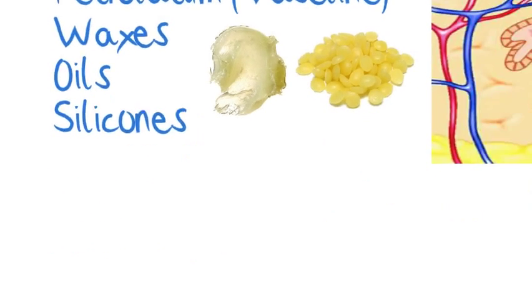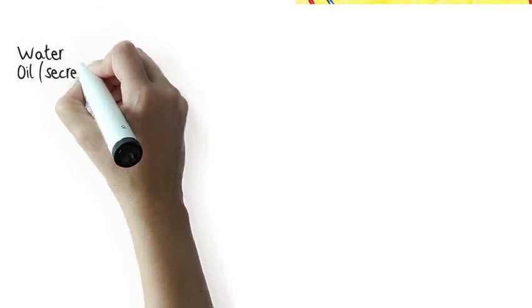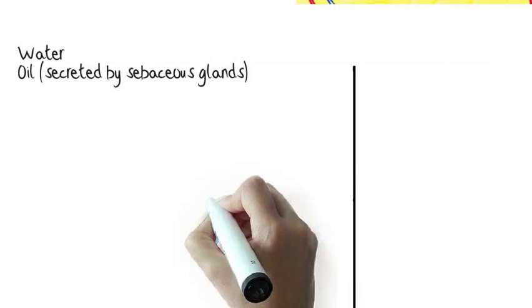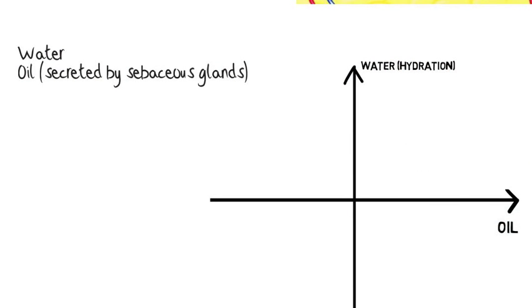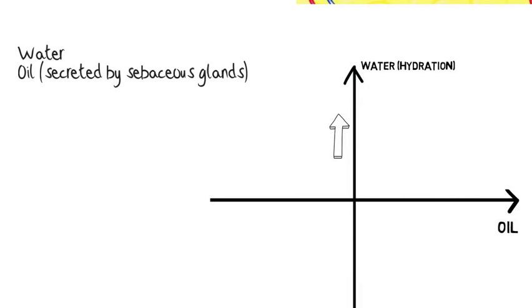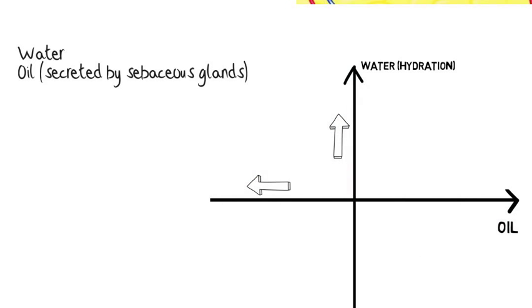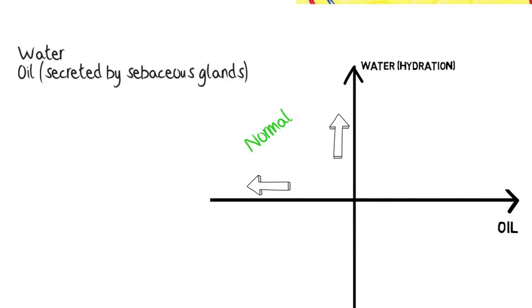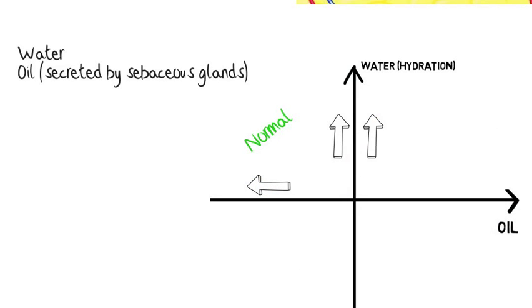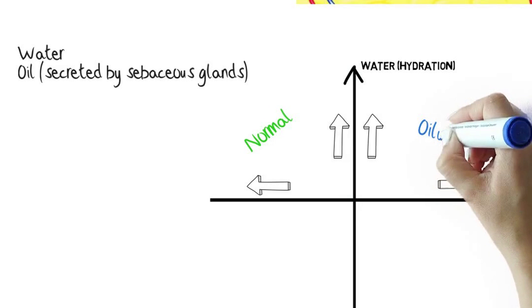Our skin contains both water and oil secreted by the sebaceous glands. So, if you look to both the water and oil content of your skin, when water content is high and the oil quantity low, your skin is well hydrated and probably normal. While if also the oil content is high, your skin will tend to be oily.